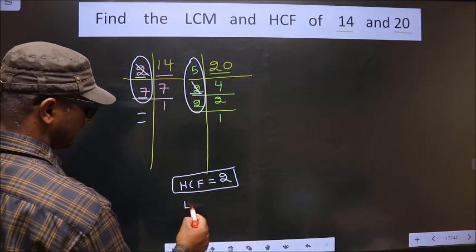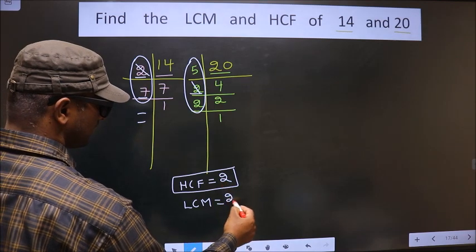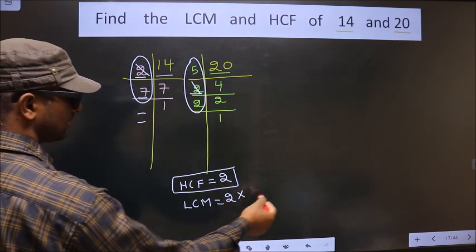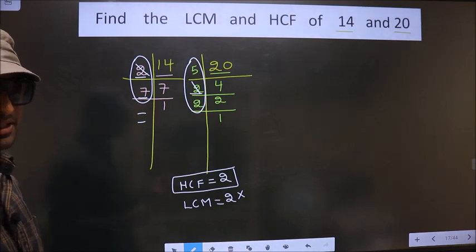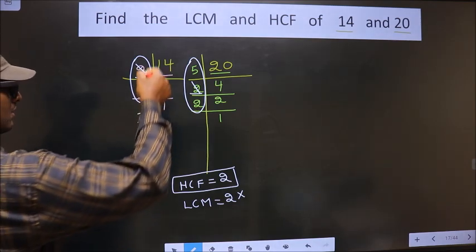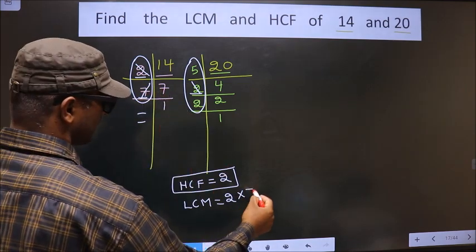To the HCF we should multiply by certain numbers. How do we decide those numbers? Over here 7 is not cut, so you cut 7 right here.